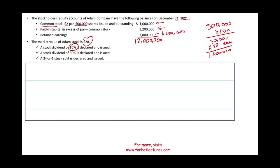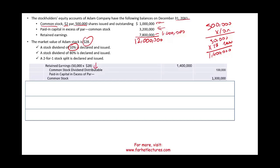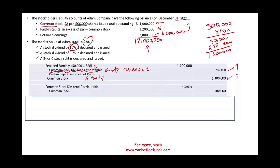So what's the entry? We're going to debit retained earnings by 1.4 million. We are going to credit an account called Common Stock Dividend Distributable, which is an equity account, for the number of shares issued times the par value — 50,000 shares times $2 equals 100,000. And everything else, 1.3 million, goes to Paid in Capital in Excess of Par, Common Stock, which is also an equity account. When we issue the stock, we debit Common Stock Dividend Distributable and credit Common Stock.